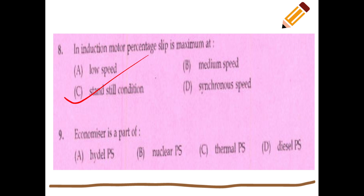An economizer is a part of a thermal power system. It is a part of the power generation system.